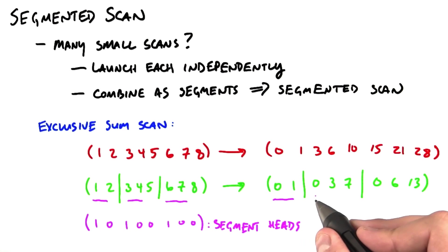So the result is the scan of 1, 2, the scan of 3, 4, 5, and the scan of 6, 7, 8.